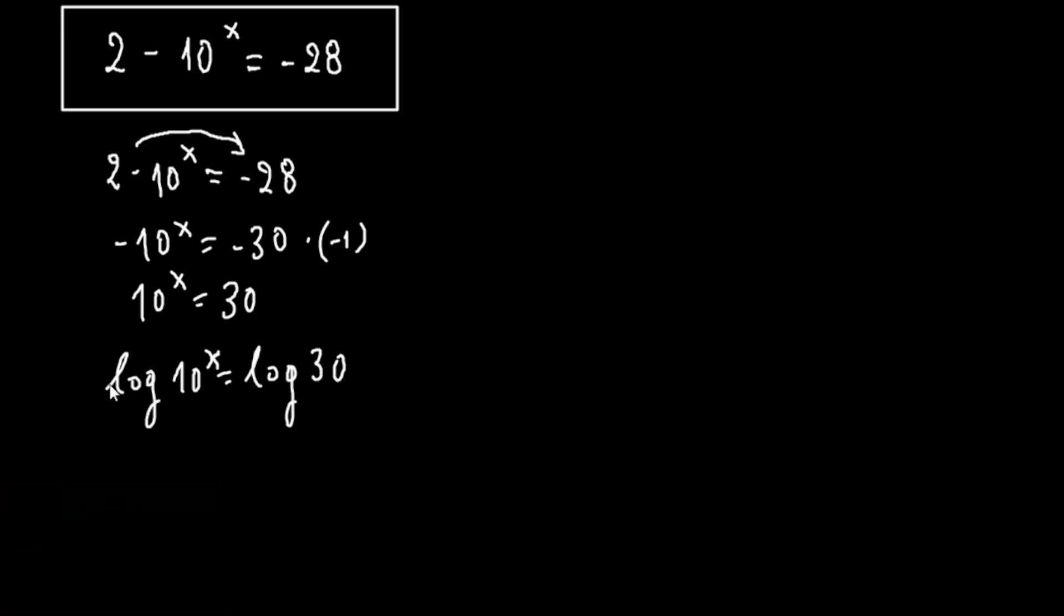From the properties of logarithms, x can come over here. So this can be x times log 10 equals to the log 30, base of 10.